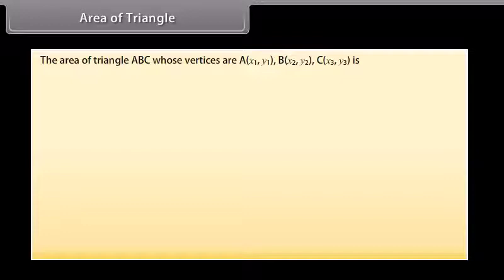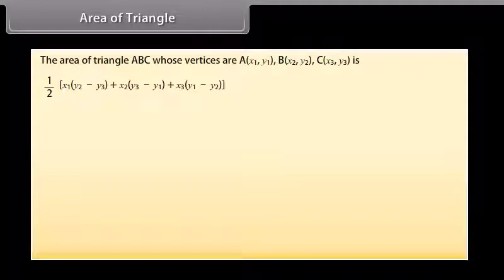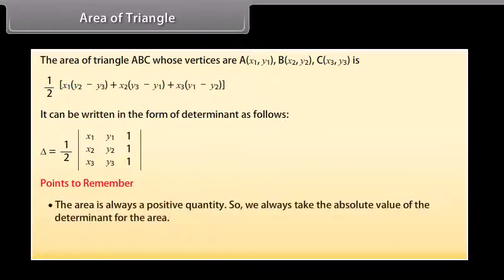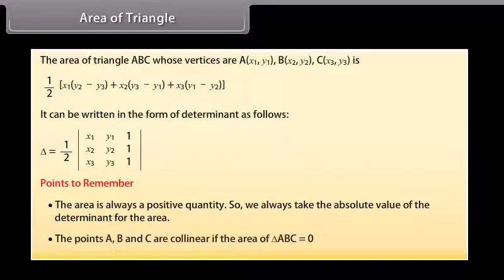The area of triangle ABC whose vertices are A(x1, y1), B(x2, y2), C(x3, y3) is: (1/2)|x1(y2 − y3) + x2(y3 − y1) + x3(y1 − y2)|. This can be written in the form of a determinant. Points to remember: The area is always a positive quantity, so we always take the absolute value of the determinant. Points A, B, and C are collinear if the area of triangle ABC equals 0.